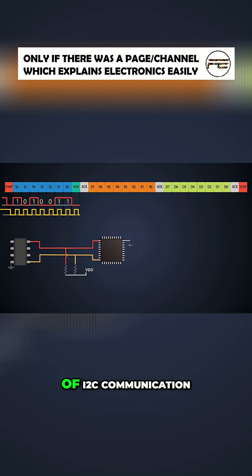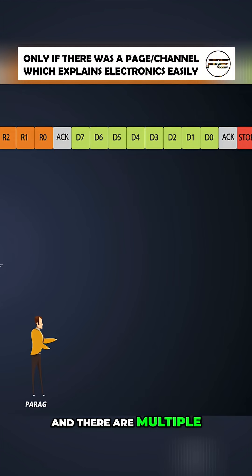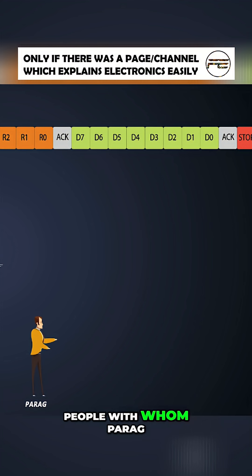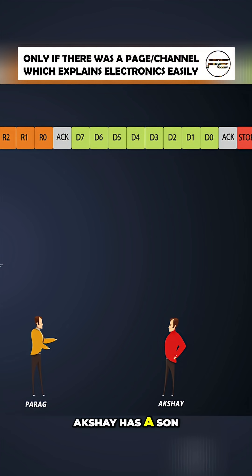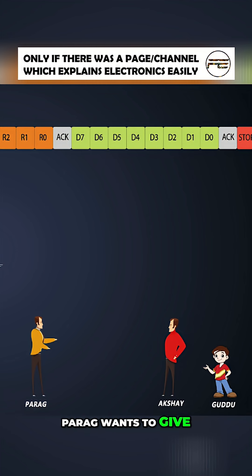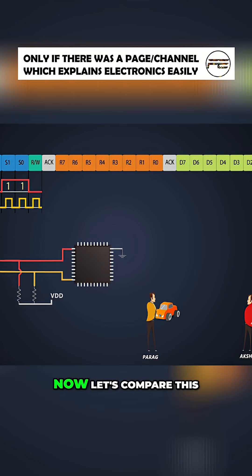Let's see the analogy of I2C communication. Consider this is Parag, and there are multiple people with whom Parag can talk, and one of them is Akshay. Akshay has a son whose name is Guddu. Parag wants to give Guddu a small toy car as a gift.